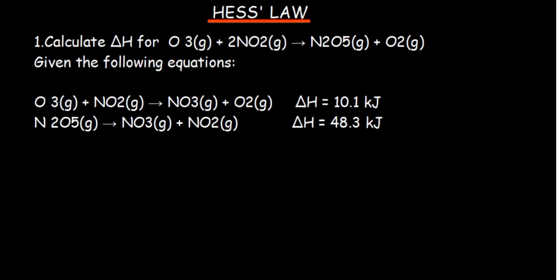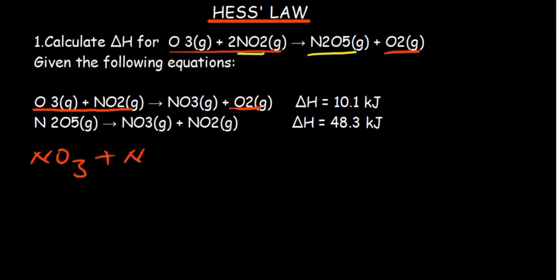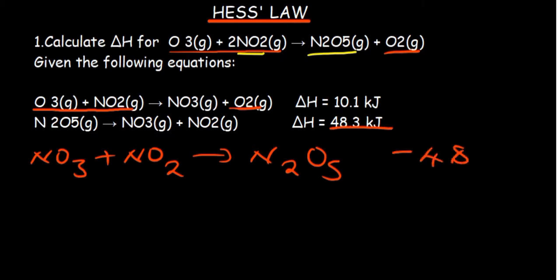Comparing the first reaction, I notice that basically everything is matching up with the main equation, including oxygen as a product. Looking at the second reaction, I can see that certain species are on the opposite side. This is enough to reverse the reaction. So if we reverse it, we're going to have NO3 plus NO2 as our reactants and a single product. Whenever you reverse, the sign is supposed to change — so since it was positive, it becomes negative.